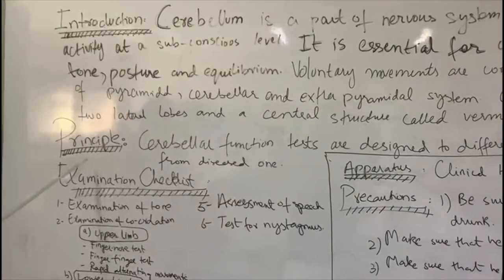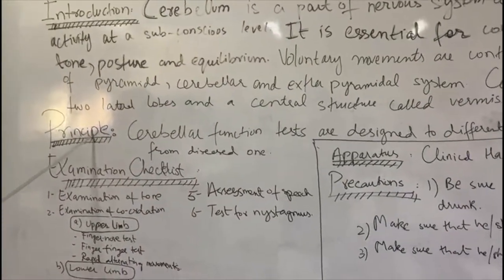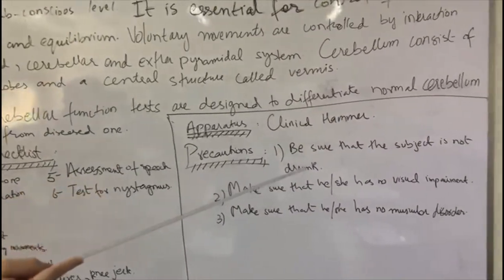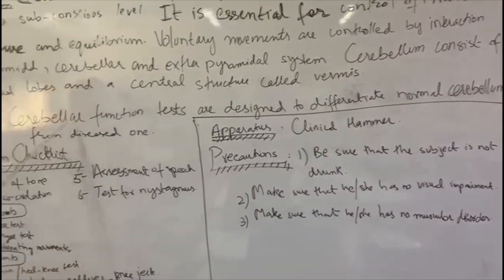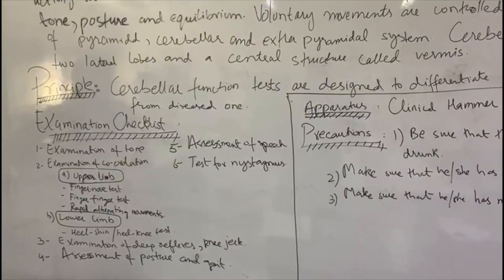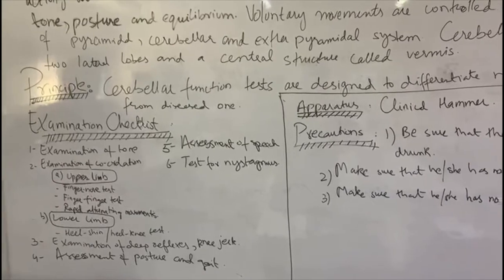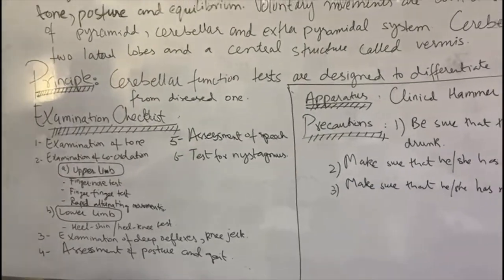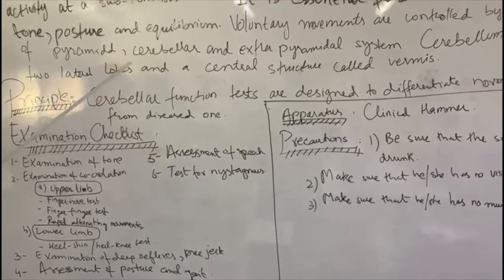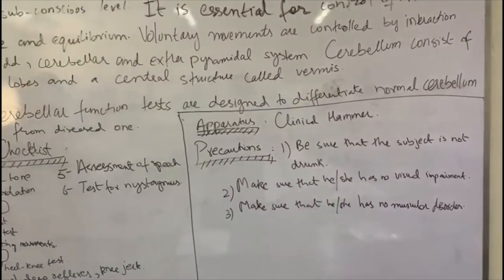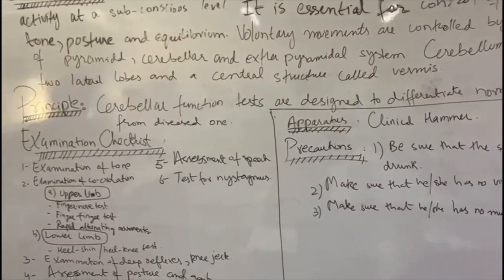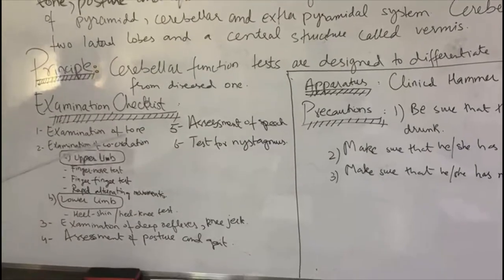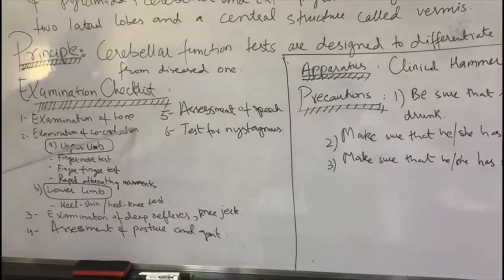The principle of this experiment is that Cerebellum Function Tests are designed to differentiate a normal Cerebellum from a diseased one. We will perform a number of tests to determine whether the Cerebellum of your subject is normal or diseased. The checklist begins with number one: examination of muscle tone.